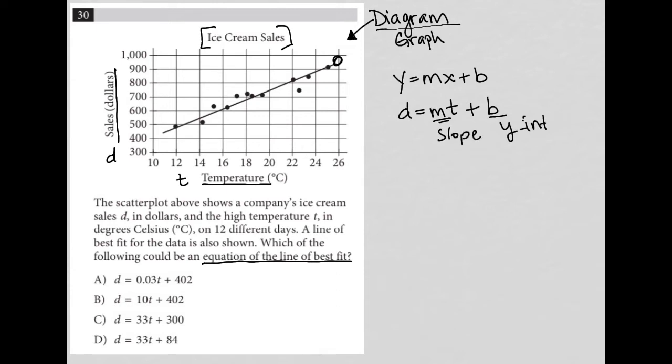So if I'm trying to find which one of these answer choices matches the line of best fit here, then I'm just going to figure out, well, where is the y-intercept on this graph? And maybe I'll need to also figure out what is the slope of this graph. So where is the y-intercept?